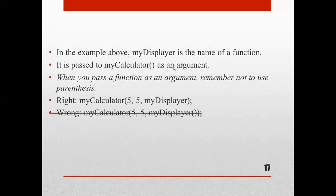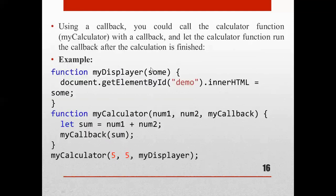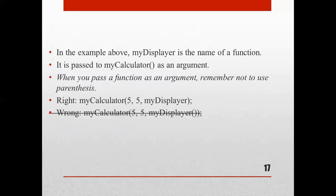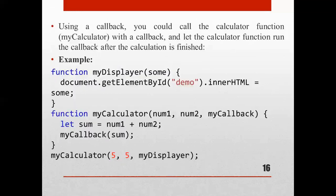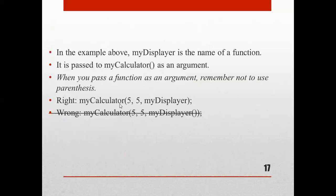Here, myDisplay is the name of the function and it is passed to myCalculator as an argument — that is the callback. When you pass a function as an argument, remember not to use parentheses. We haven't used parentheses for myDisplay here. This is the right way: whenever passing a function as an argument, write it without parentheses.